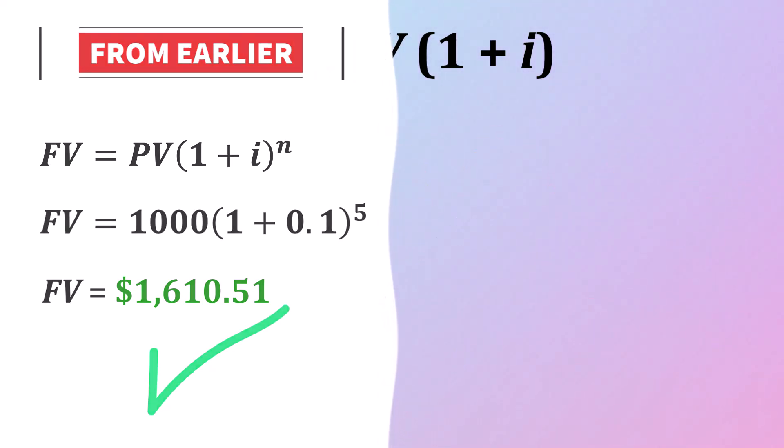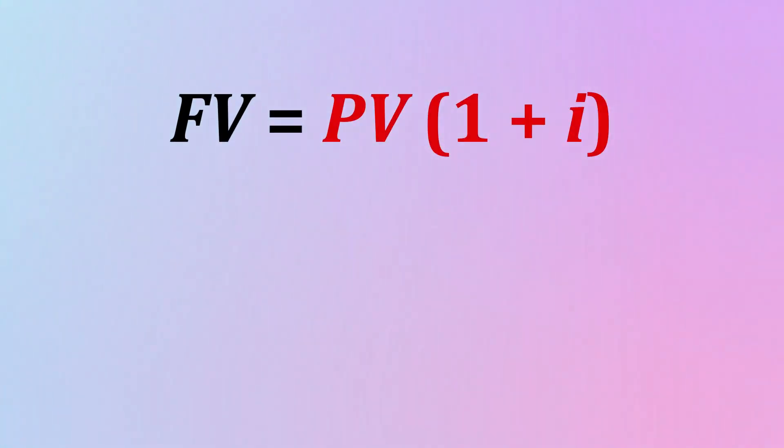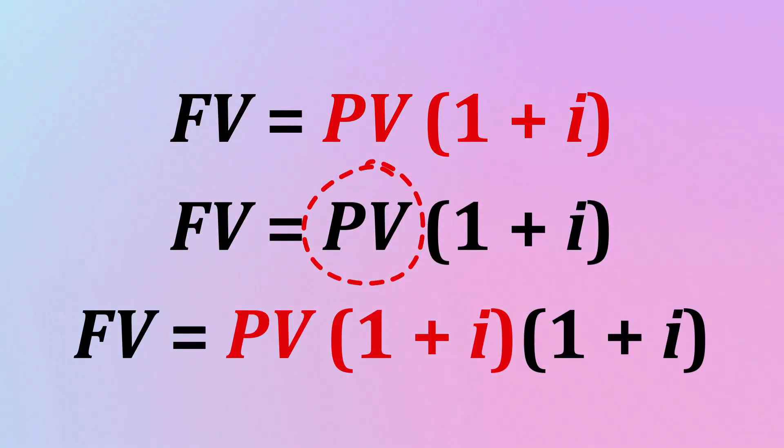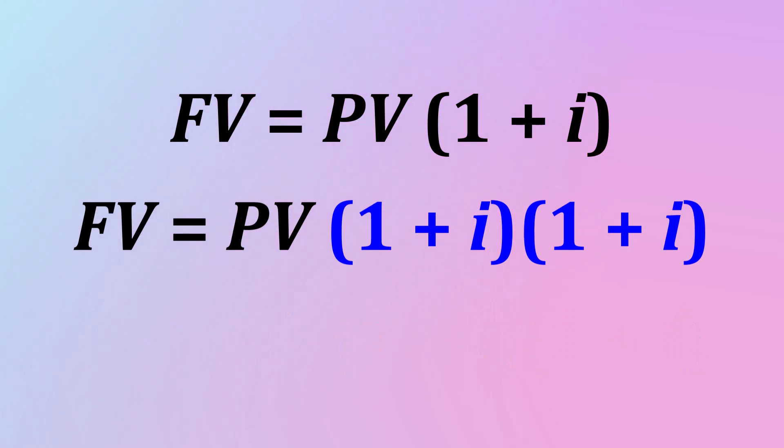To generalize what we did, simply place the entire right side of FV, which represents the base value at the start of a period, back into PV. This produces the equation FV is equal to PV times 1 plus I times 1 plus I. Notice that the two factors of 1 plus I also correspond to the two periods the money was left to mature.